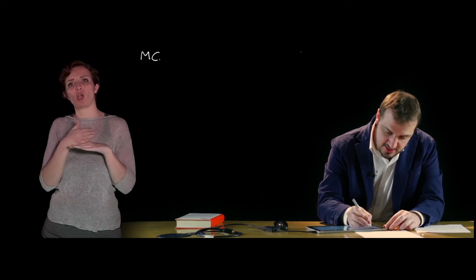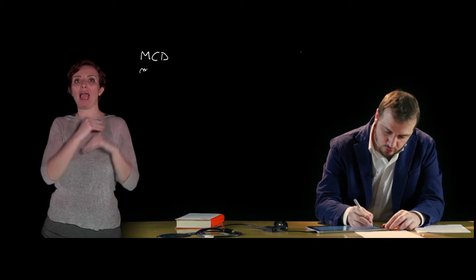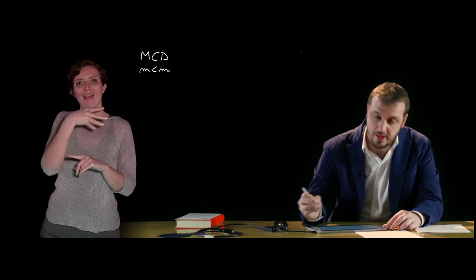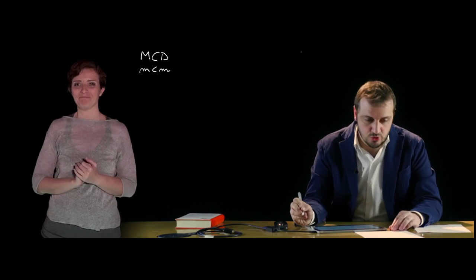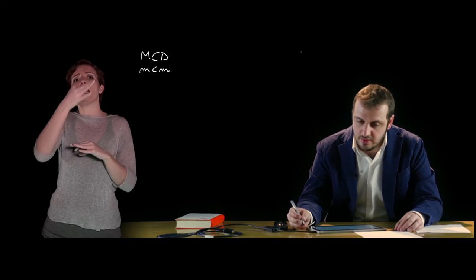Un concetto molto importante che caratterizza i monomi, ma poi vedremo anche i polinomi, è quello del massimo comun divisore e del minimo comune multiplo, identificati con gli acronimi MCD e mcm. Il massimo comun divisore di due o più numeri è il più grande tra i divisori comuni, di conseguenza non è altro che il prodotto dei soli fattori comuni presi un'unica volta con l'esponente più piccolo.